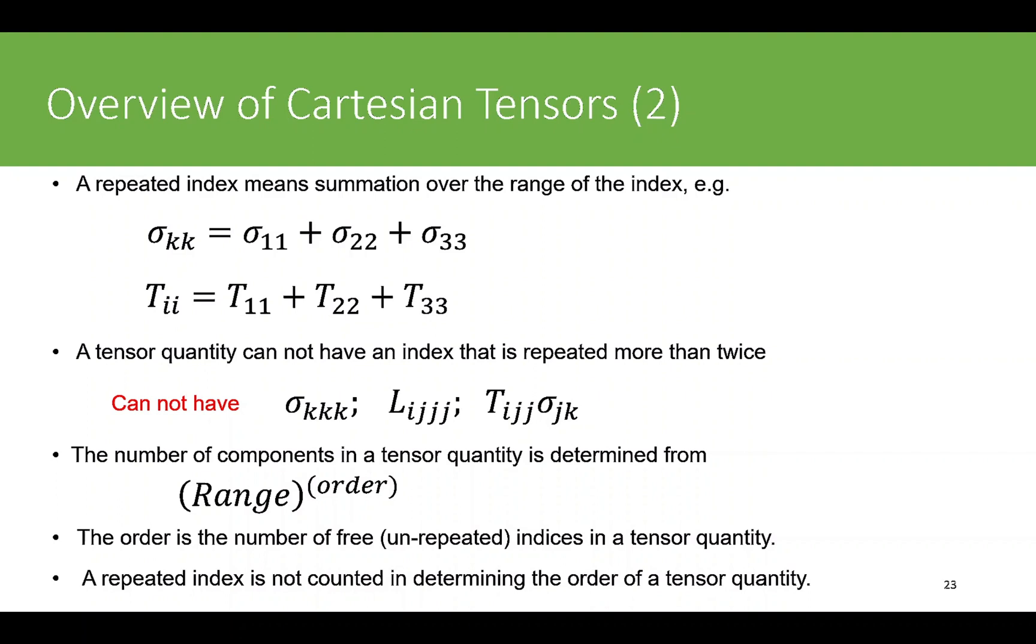For example, sigma_ij has a range of three and the order is two since it has two indices. So three exponent two, or three raised to power two, would mean 3 times 3 which equals 9. That's why a rank two tensor with two indices will have nine components.